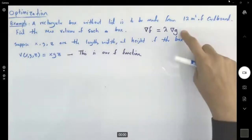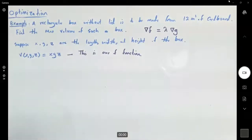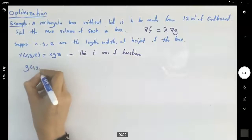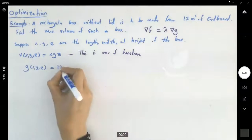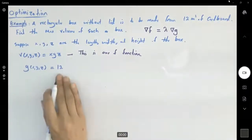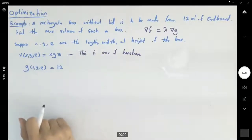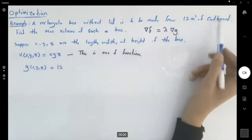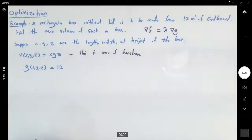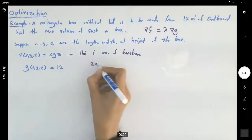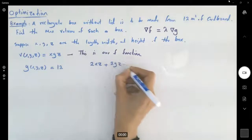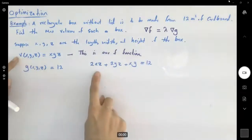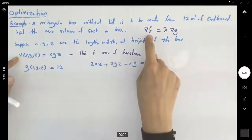Now what about the constraint — what is g? Our function g of x, y, and z equals 12. But how do I formulate this function? We are creating a box without a lid from 12 square meters of cardboard. The constraint g can be written as 2xz plus 2yz plus xy equals 12. So I have my volume and my constraint. Now I'm going to apply the Lagrange multipliers method.